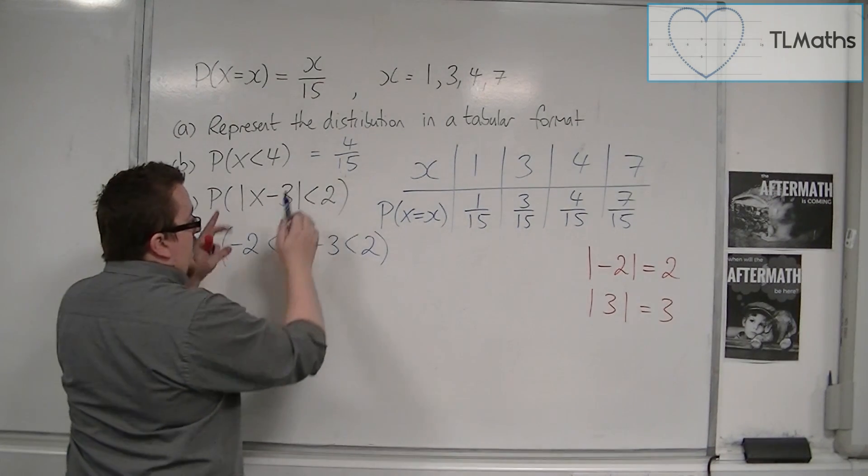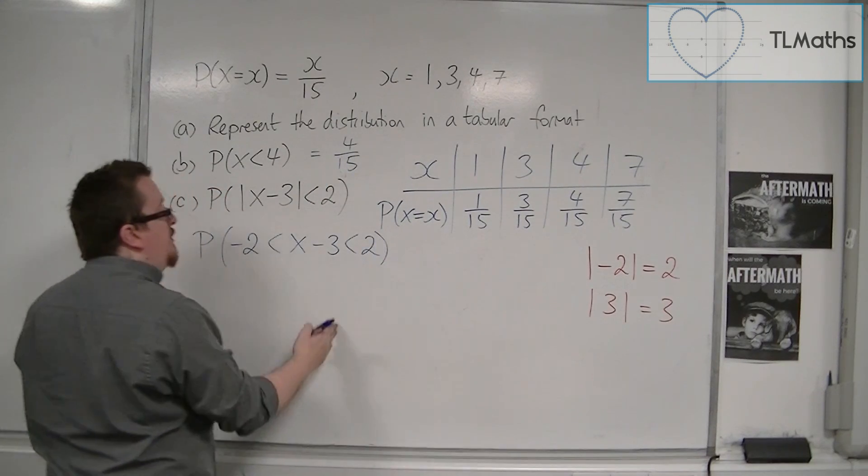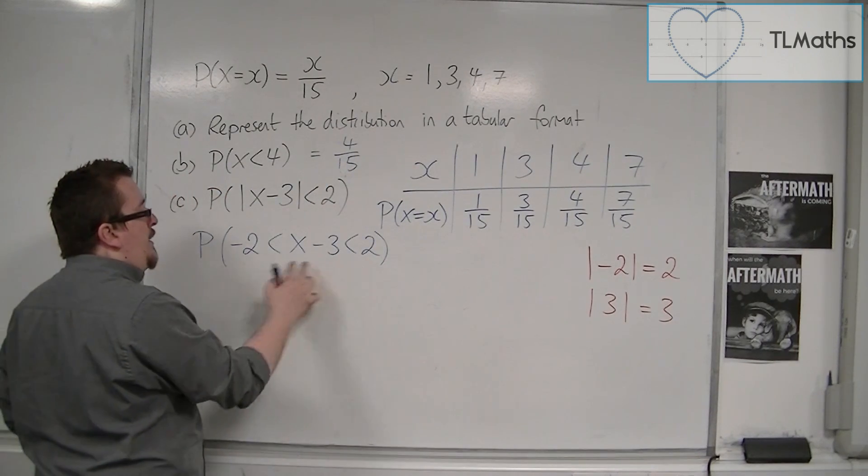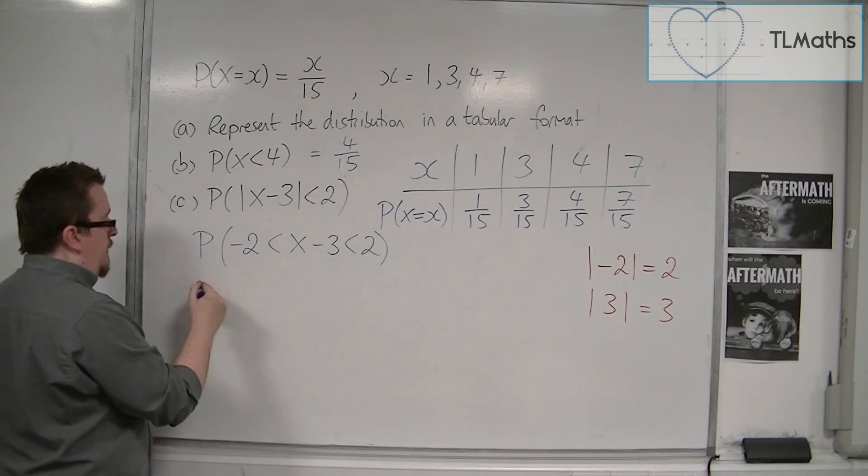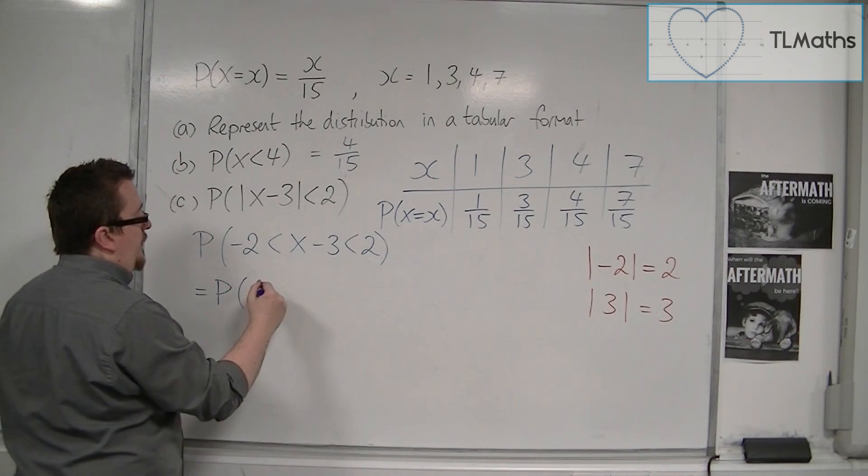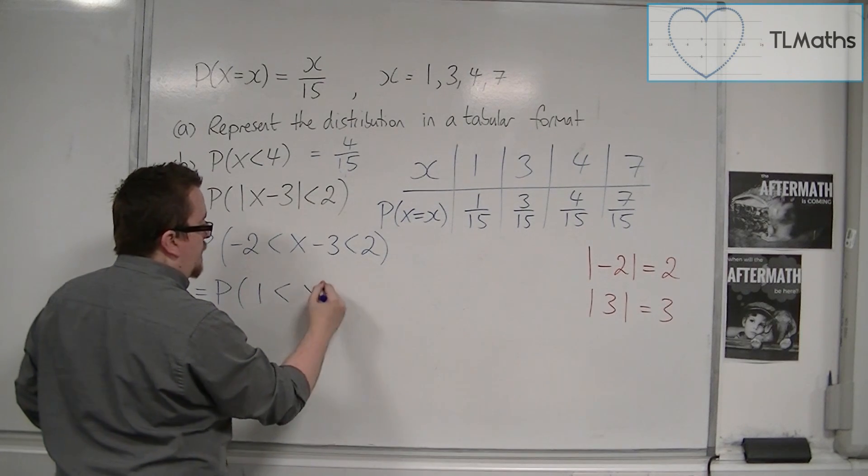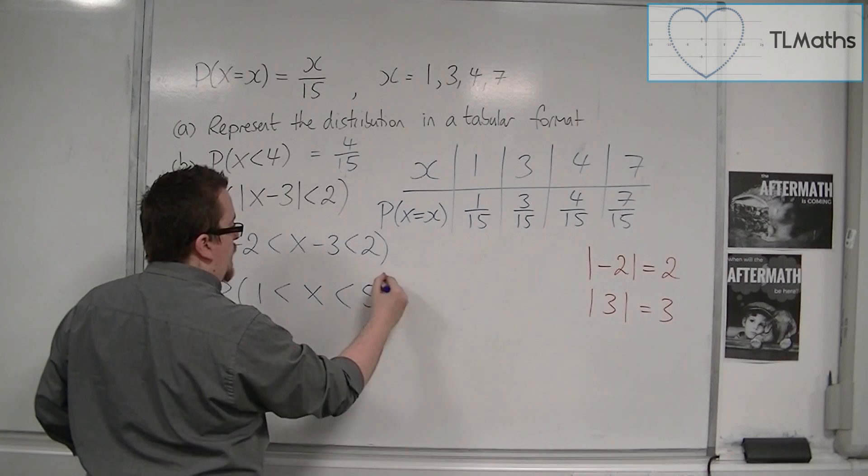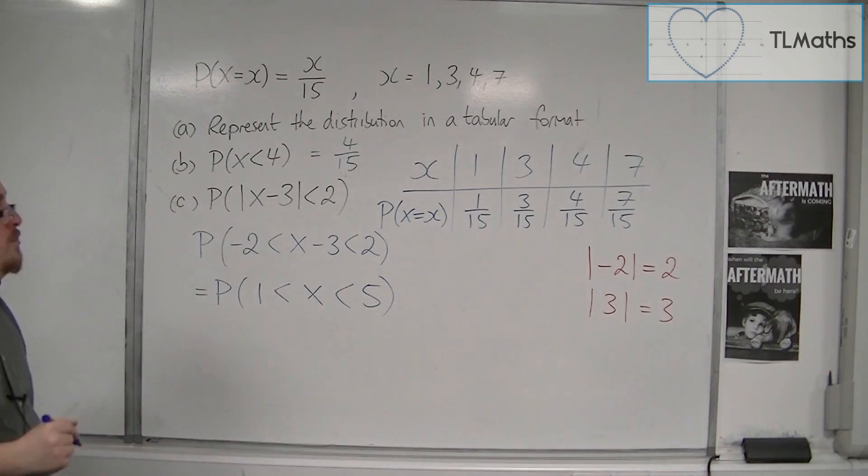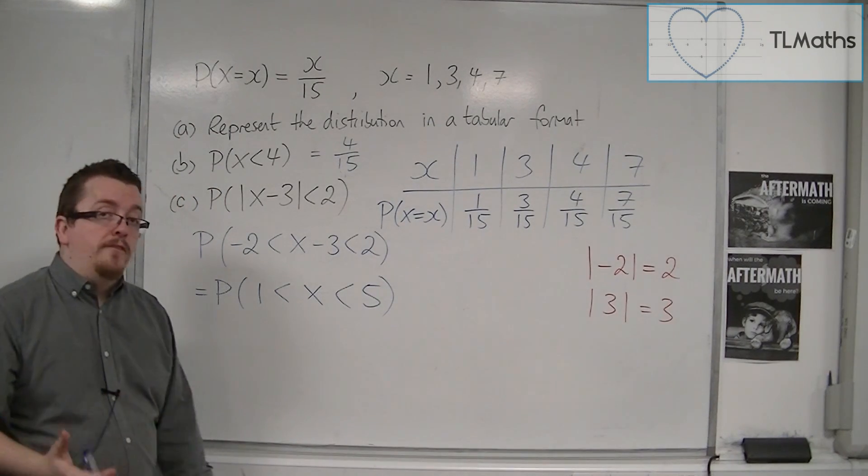So then, if you're happy with writing it like this, you can then add 3 to each of these three sides. So this is the same as minus 2 plus 3, add 3 to the middle so we just get x, add 3 to the right we get 5. So it's actually the probability of x being between 1 and 5.